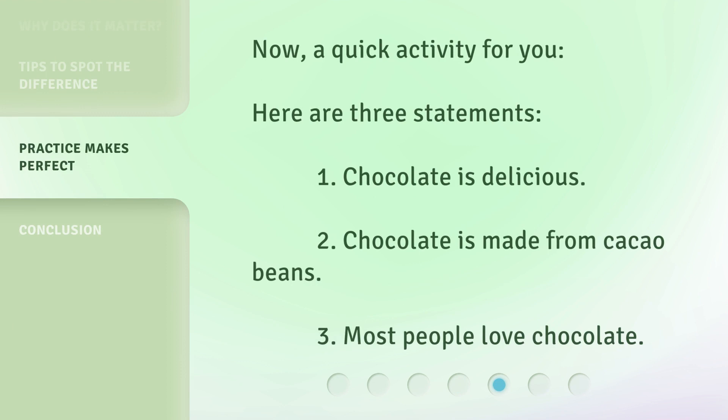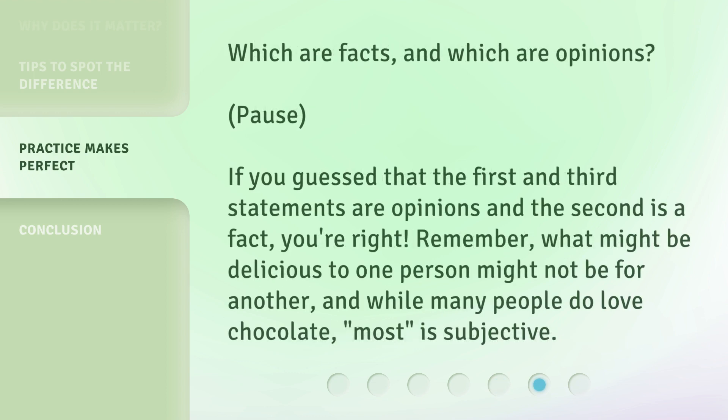Now, a quick activity for you. Here are three statements: 1. Chocolate is delicious. 2. Chocolate is made from cacao beans. 3. Most people love chocolate. Which are facts, and which are opinions? Pause. If you guessed that the first and third statements are opinions and the second is a fact, you're right. Remember, what might be delicious to one person might not be for another, and while many people do love chocolate, 'most' is subjective.